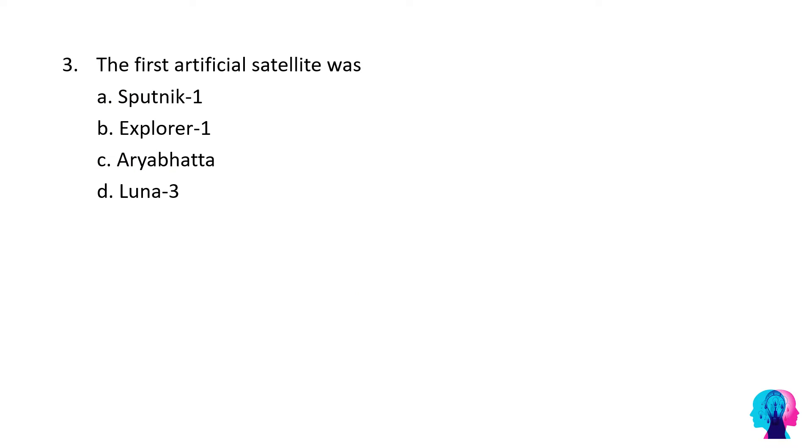Next question: The first artificial satellite was Sputnik 1, Explorer 1, Aryabhata, or Lunar 3. The correct answer is Sputnik 1. Sputnik 1 was launched on 4th October 1957 by Soviet Union and was launched as the world's first artificial satellite.